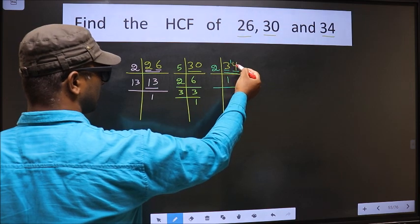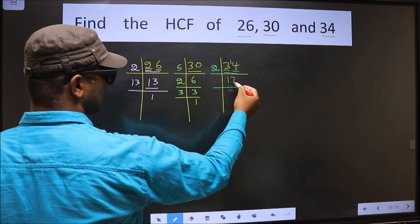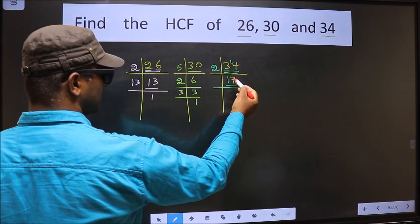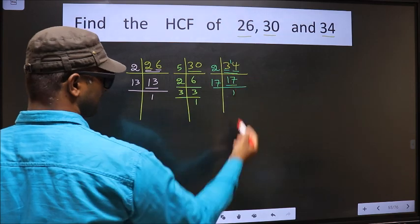1 carried forward making it 14. When do we get 14 in 2 table? 2 times 7 is 14. Now here we have 17. 17 is a prime number, so we take 17 times 1 is 17.